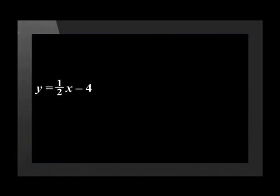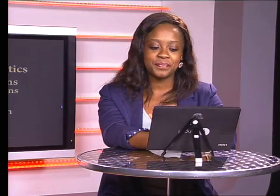Now that we know the value of a and q, let's put both into the standard form for a linear function: y equals one half x minus 4. The question used functional notation, so we must give our answer in functional notation. The function was given the label g, so the equation is g of x equals one half x minus 4.